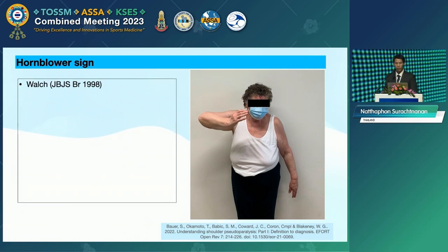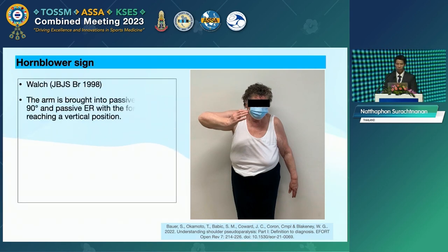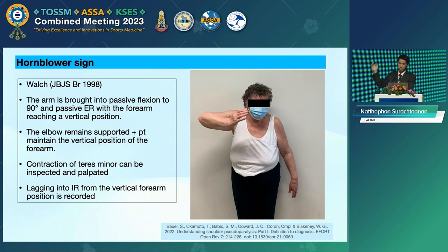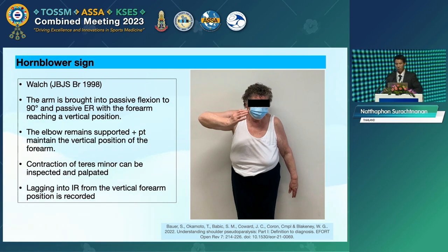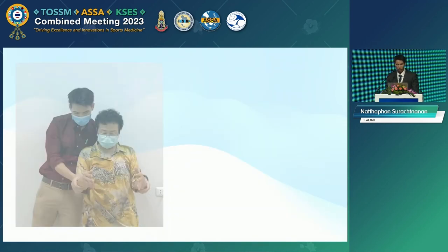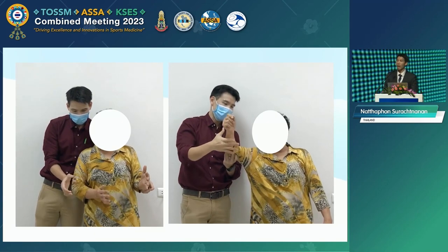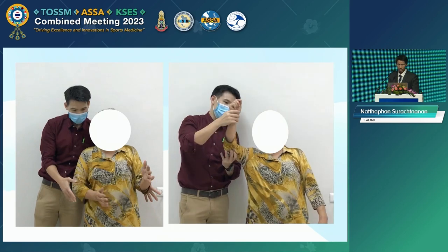The second test is the modified hornblower test. The arm is brought into passive elevation at 90 degrees and passive external rotation, with the arm reaching the vertical position. The elbow remains supported. The patient is asked to maintain the vertical position of the forearm. The contraction of the teres minor can be inspected and palpated at the posterior-lateral border of the scapula. Lagging into internal rotation of the vertical forearm position is recorded. The left video shows the patient has weakness of external rotation while the arm is at the side — she cannot maintain the forearm in neutral position. The right video shows she also cannot maintain the forearm in the vertical position.